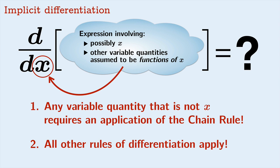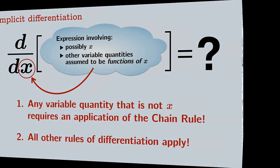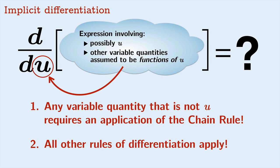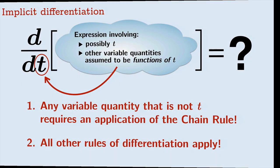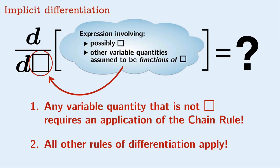You can take the derivative with respect to x, u, t, or any variable you want — the rules change accordingly. You just have to keep track of the independent variable with respect to which you're differentiating. The same kinds of rules apply throughout.